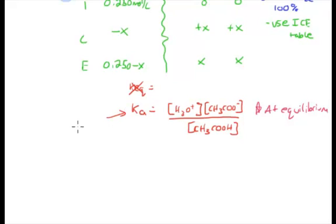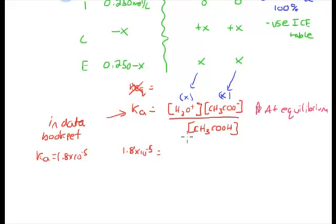The Ka is in your data booklet for all the weak acids you're going to be doing. In the data booklet, the Ka is equal to 1.8 multiplied by 10 to the negative 5. So we insert that variable, 1.8 times 10 to the negative 5, equals the H3O concentration, which is X, and the CH3COO concentration, which is also X. These are both equilibrium concentrations. So you end up with X multiplied by X, which is X squared, divided by 0.250 minus X.